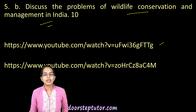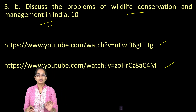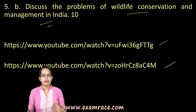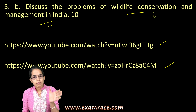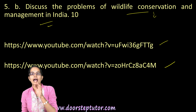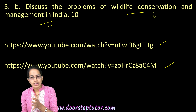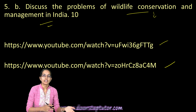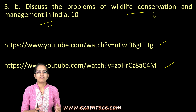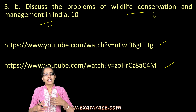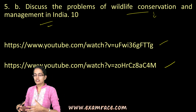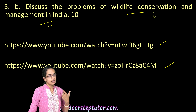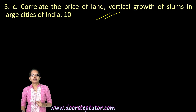The next question talks about wildlife conservation and management and the problems associated with it. We have covered that elaborately in these two lectures — links are available in the description below. You would understand the various efforts both at a global level and at the country level: the wildlife institutions, the Dehradun protection centers, Project Rhino, Project Elephant, Project Crocodile, and the problems of poaching and hunting addressed in this question.